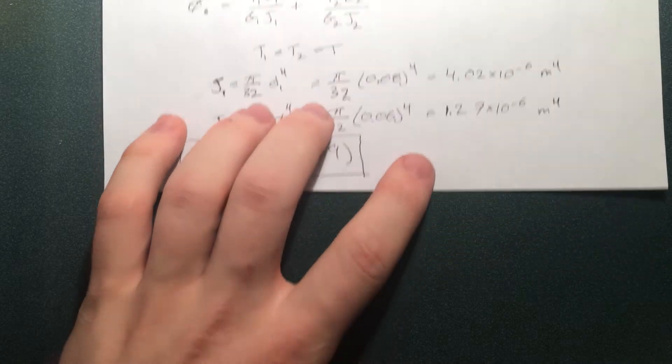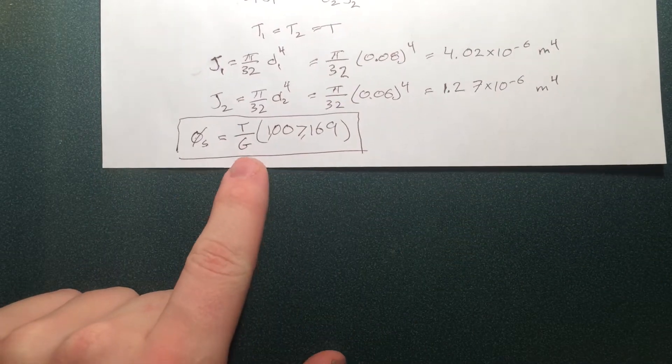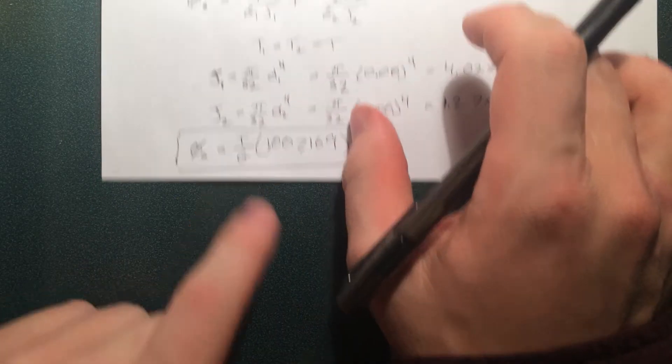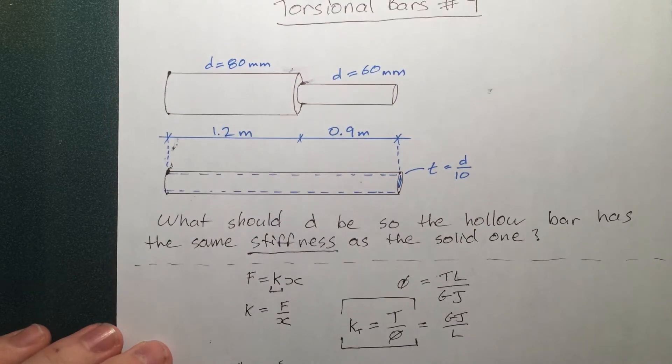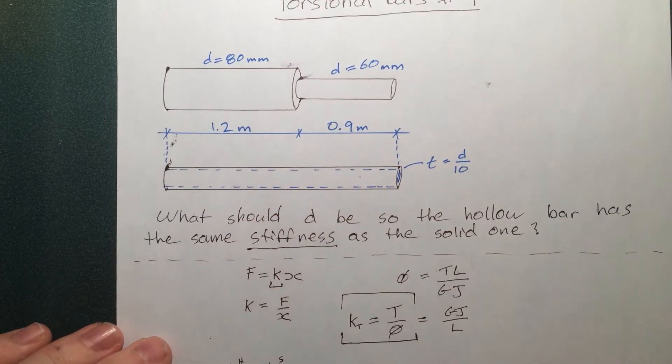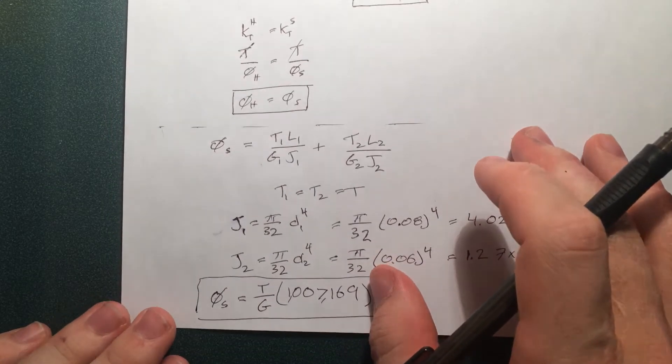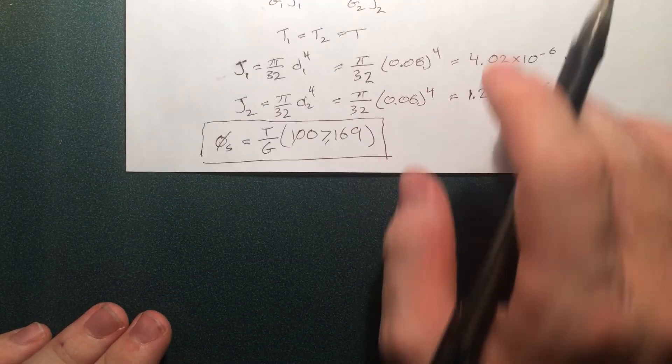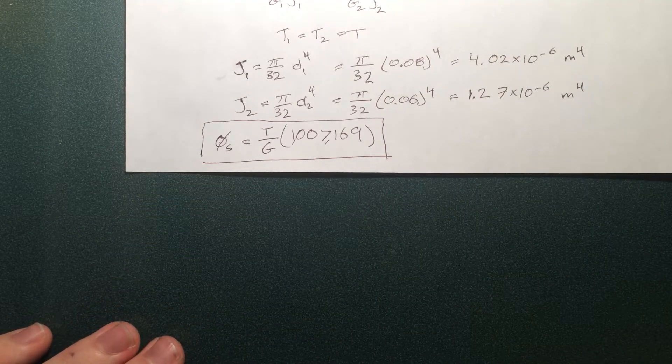So that's phi for the solid one in terms of T and G we don't know those but don't be worried because we're not going to know T and G you know for the hollow one either so those will cancel each other out when we equate them to each other so let's go and find the phi for the hollow one.